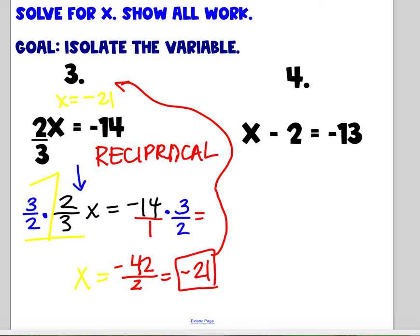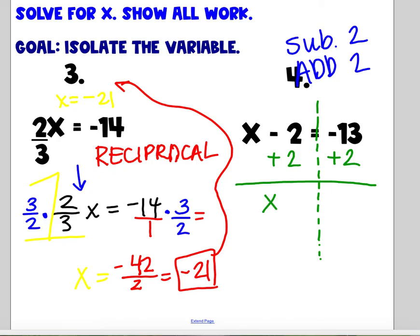Number 4. I have x minus 2. So I'm subtracting 2 equals negative 13. What's the inverse? Add 2. Again, if you want to draw the line down your equal sign, stay organized. I'm going to add 2 to both sides. X. What is negative 2 plus 2? Zero. Equal. What's negative 13 plus 2? Negative 11.